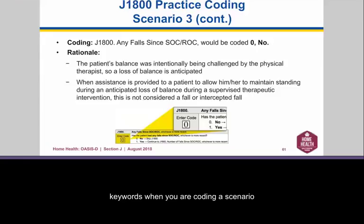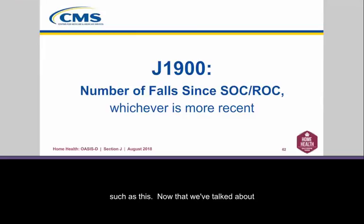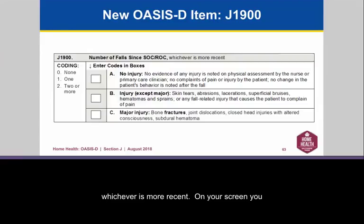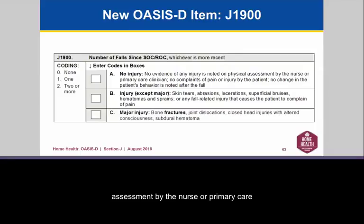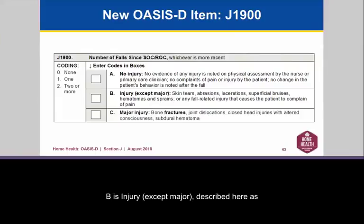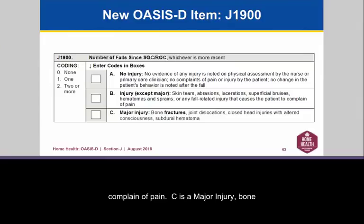Now that we've talked about J1800, let's move on to J1900 — the number of falls since start or resumption of care, whichever is more recent. You have three coding options: Option A, no injury — no evidence of any injury noted on physical assessment, no complaints of pain, no change in behavior after the fall. Option B, injury except major — skin tears, abrasions, lacerations, superficial bruises, hematomas, sprains, or any fall-related injury causing the patient to complain of pain. Option C, major injury — bone fracture, joint dislocation, closed head injury with altered consciousness, or subdural hematoma.